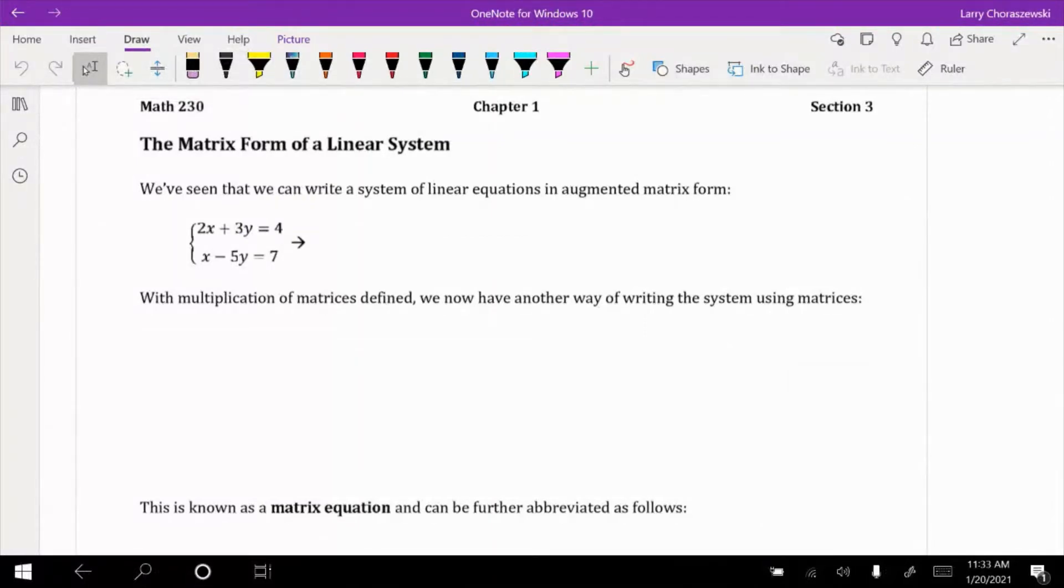All right, so what we're going to look at is a different way of writing out a linear system, which involves a few matrices. We've already taken a look at one way of writing a linear system using a matrix, and that kind of matrix was an augmented matrix. So, for example, with a system such as 2x plus 3y equals 4, and x minus 5y equals 7...